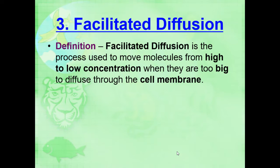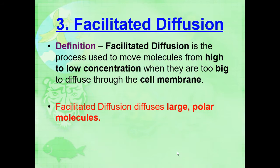Facilitated diffusion is the process used to move molecules from a high concentration to a low concentration when they are too big to diffuse through the cell membrane. Facilitated diffusion is going to move those large polar molecules, so regular diffusion moves non-polar molecules that are small. Facilitated diffusion is going to move the big ones.